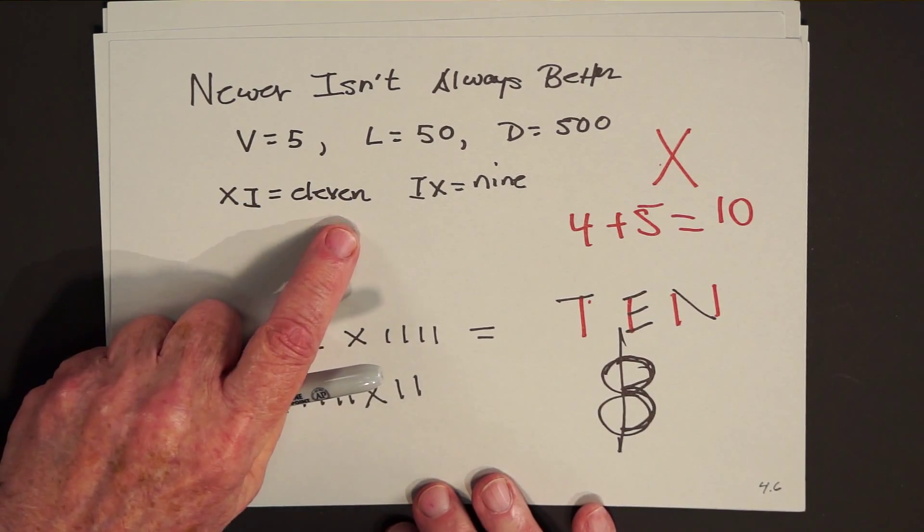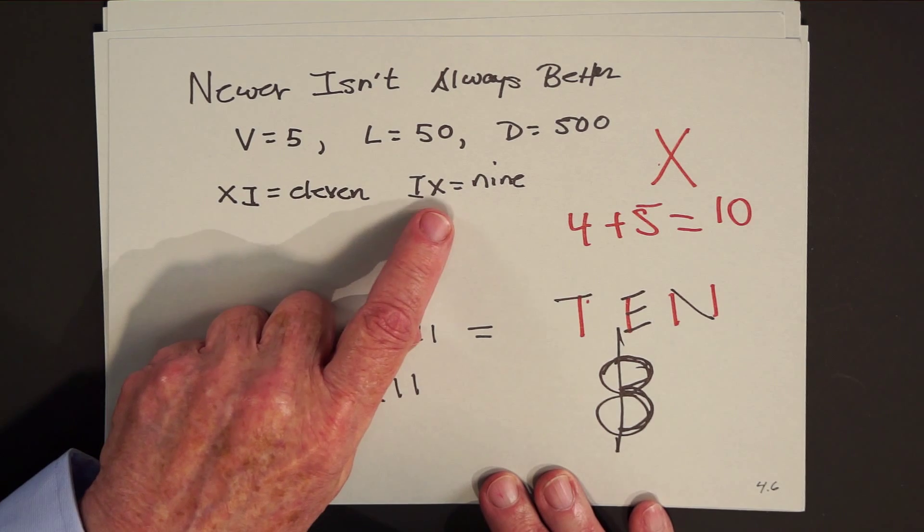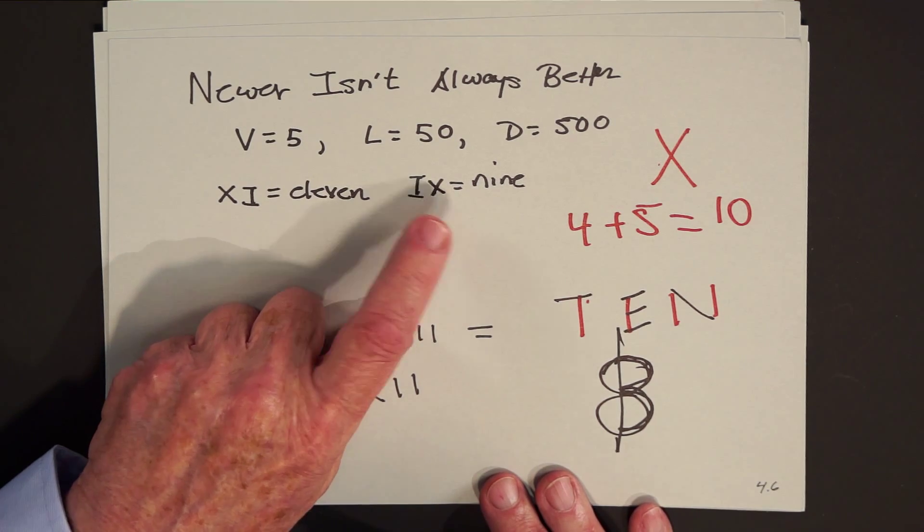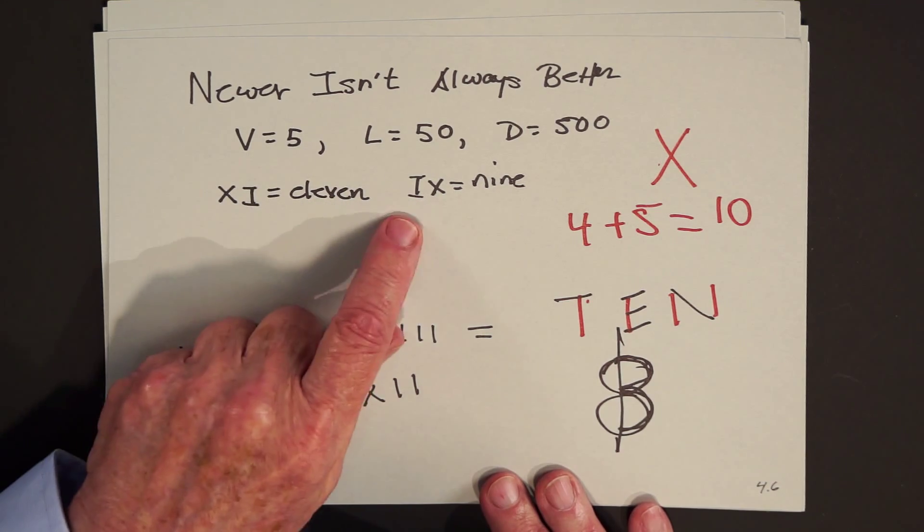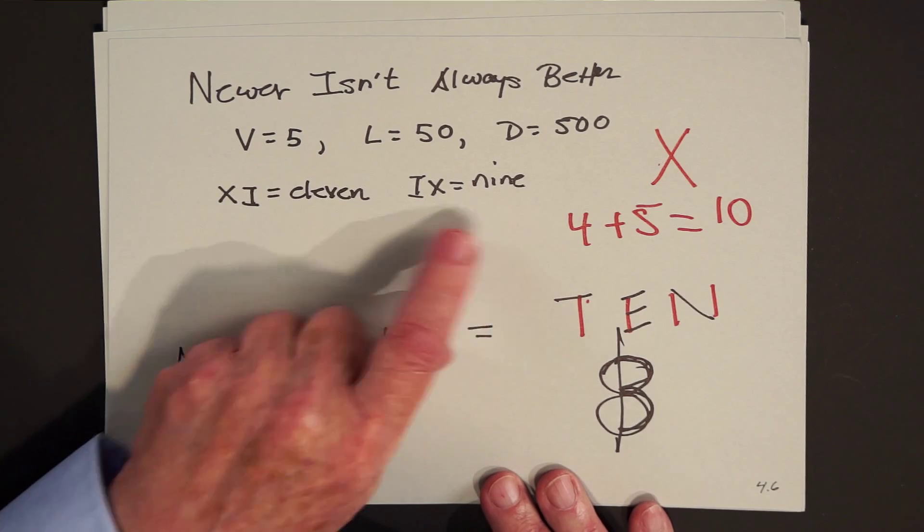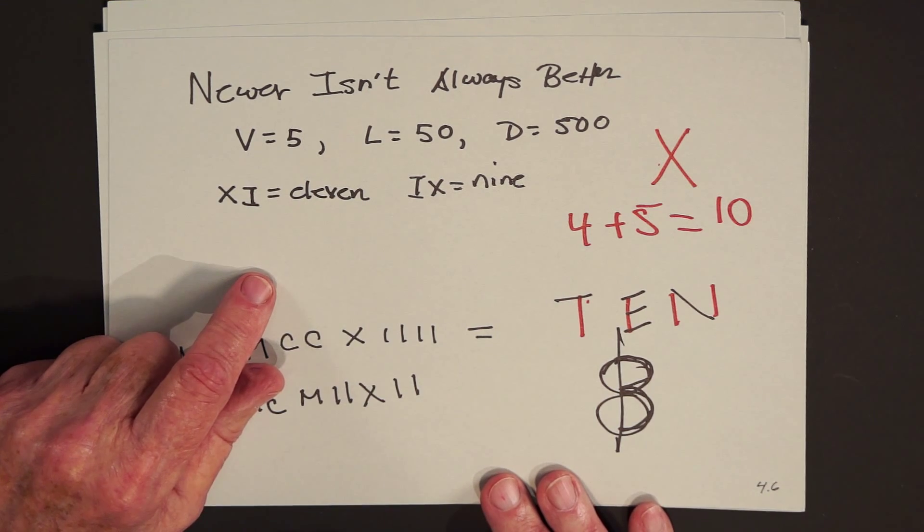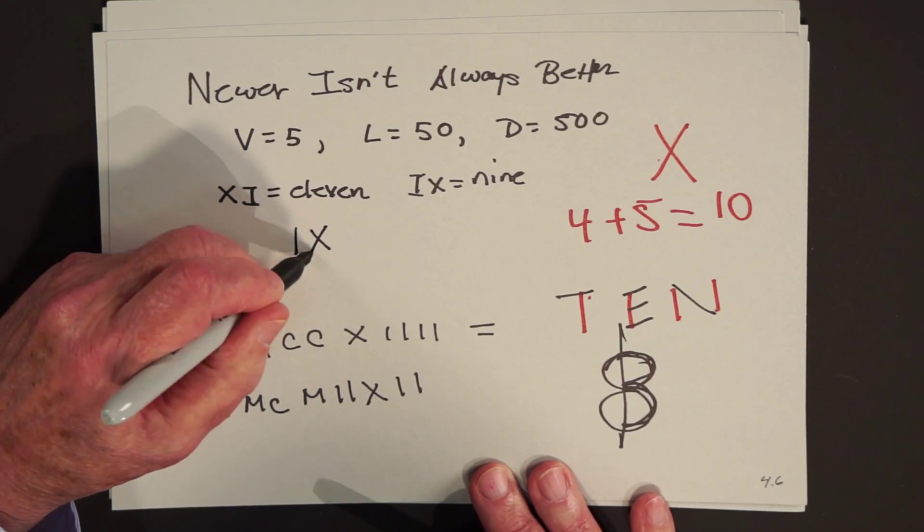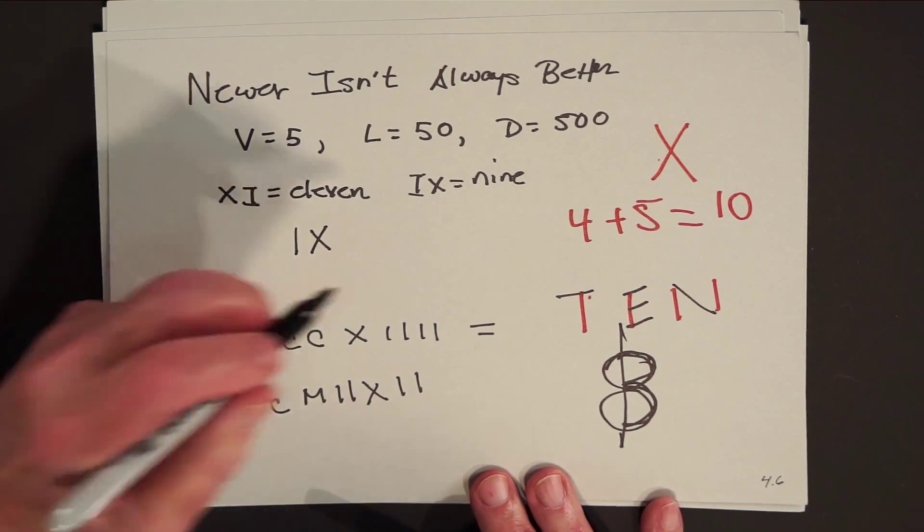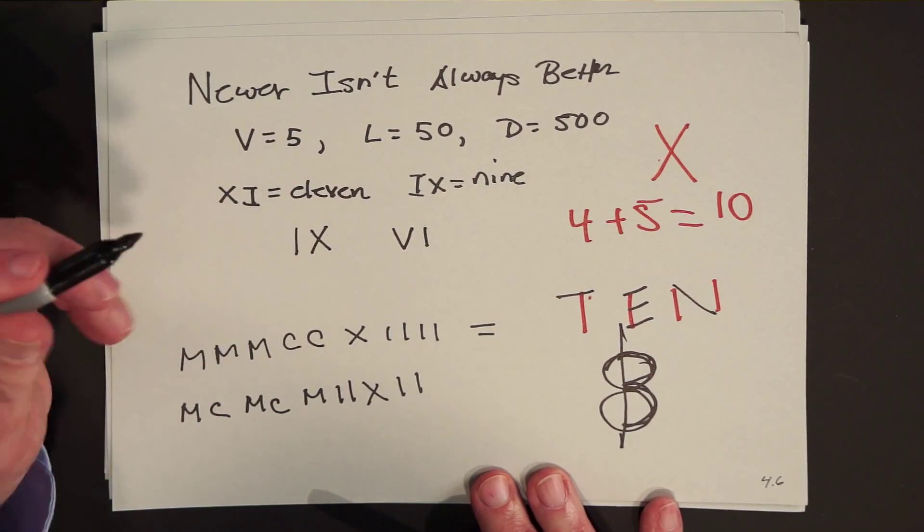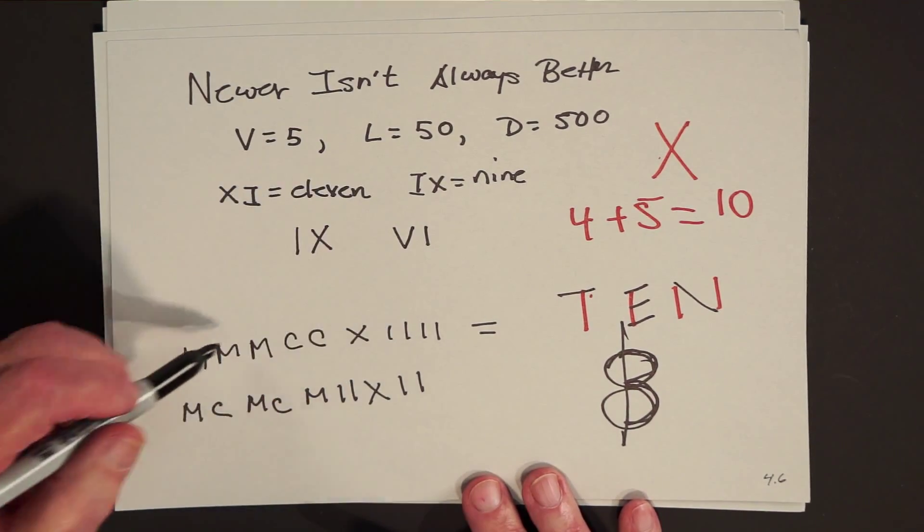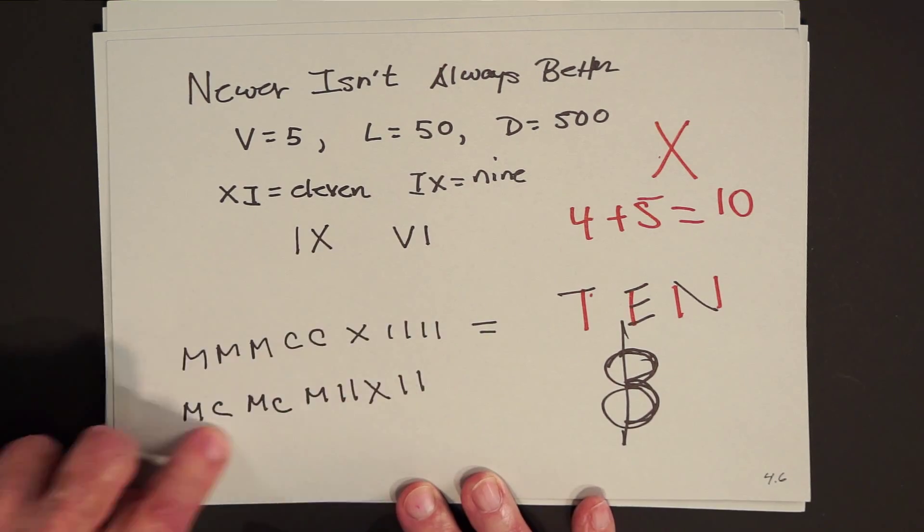Now, what happens with the Roman numerals also is they said, if you put a smaller denomination in front of a bigger one, it means to subtract. So XI would mean eleven, but IX would mean nine. Now, you see, this goes against visualness. If you have a ten dollar bill and a one dollar bill, it's eleven dollars no matter whether you start with the ten and add the one or whether you start with the one and add the ten. The reason that the Romans did this was that they only used Roman numerals to number pages. So it was much easier to write this than to write nine separate tally marks. It was much easier to write this than to write six separate tally marks.